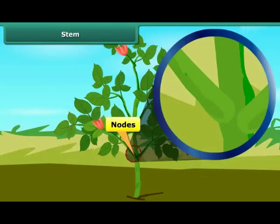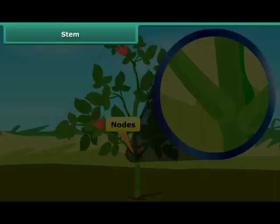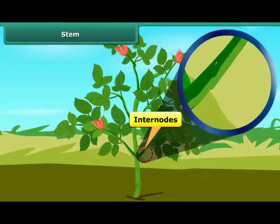Nodes are the swollen portions of the plant that hold buds, which grow into leaves, flowers, etc. Internodes, on the other hand, are the stretches between two nodes.